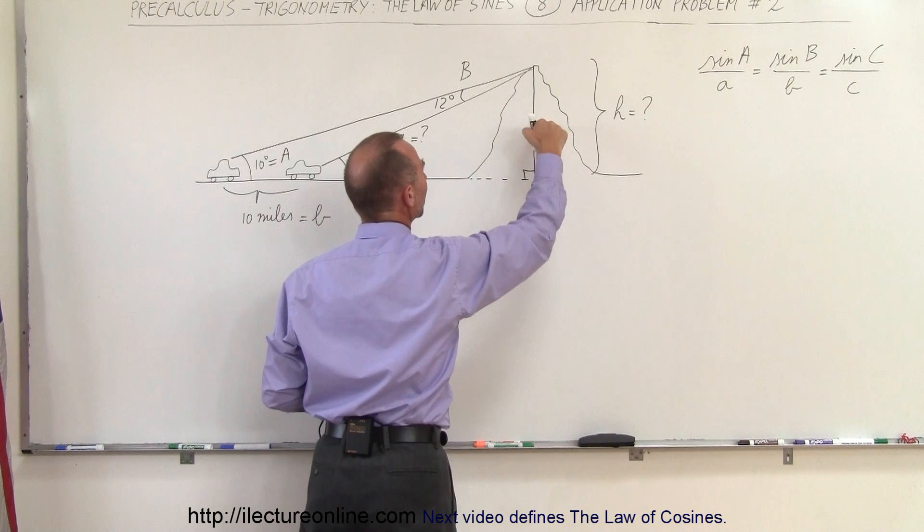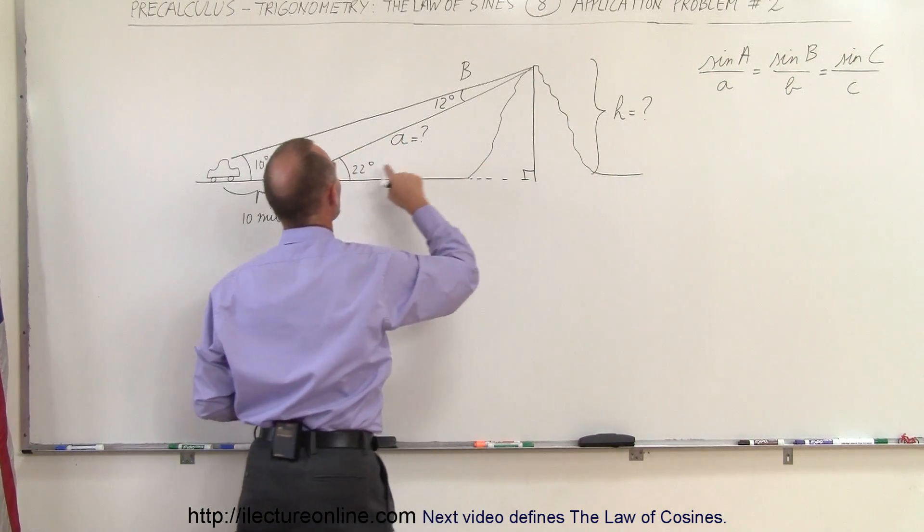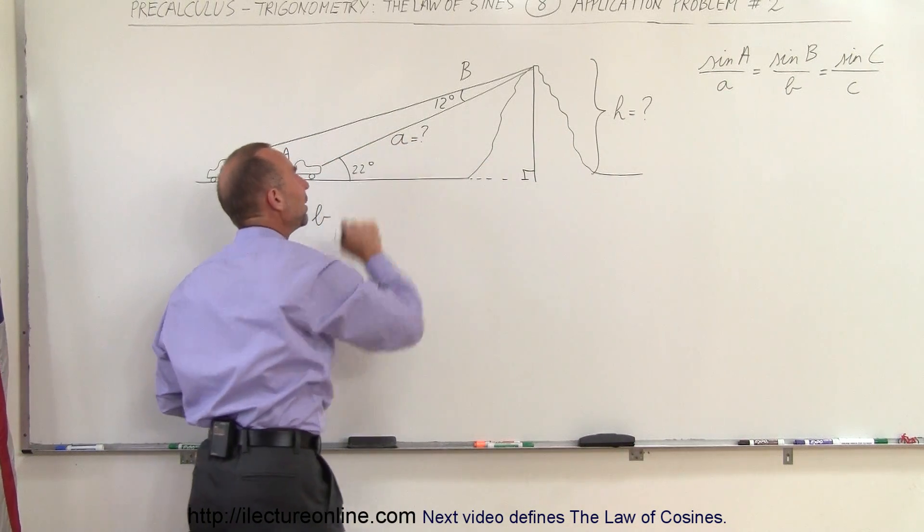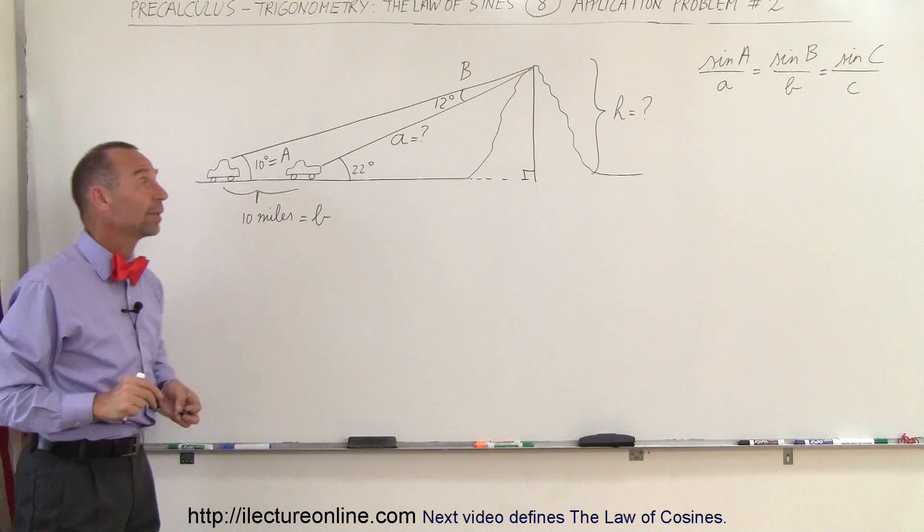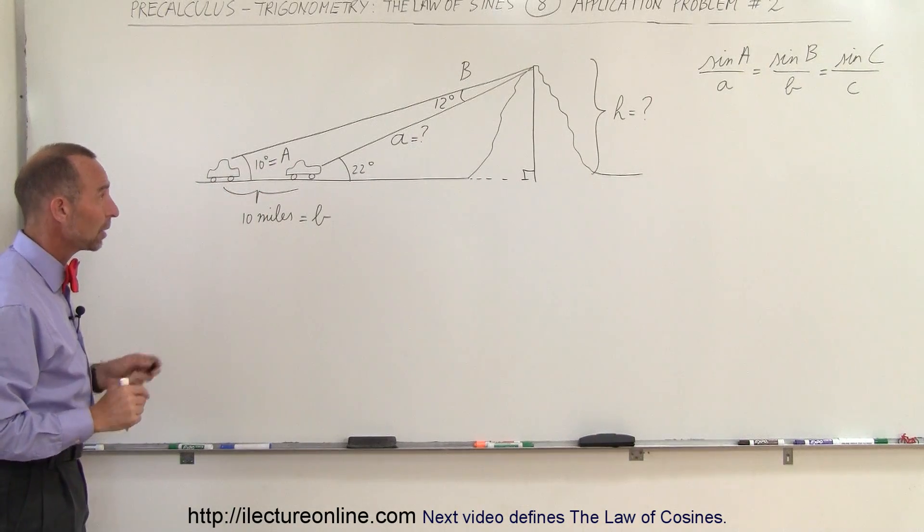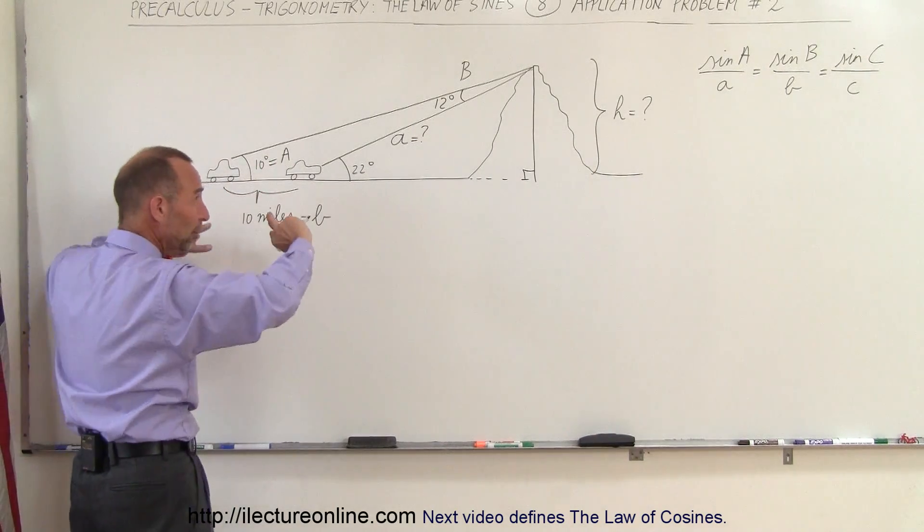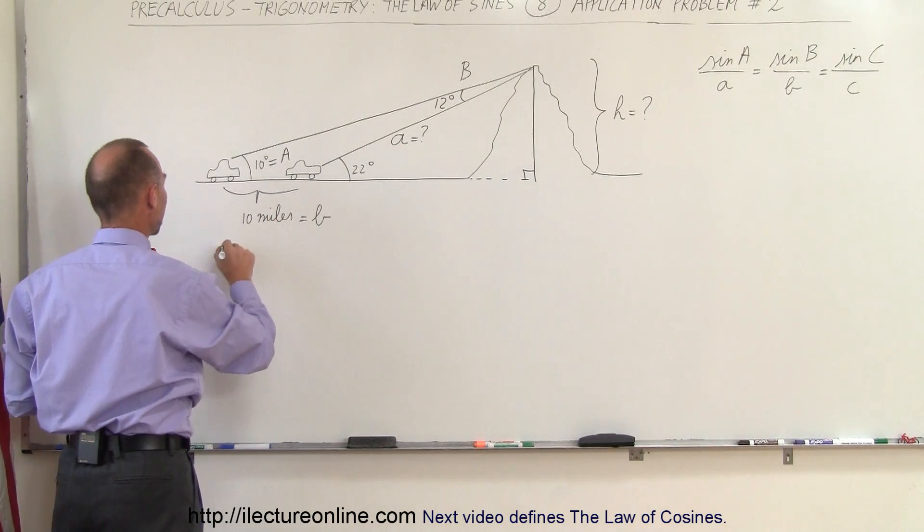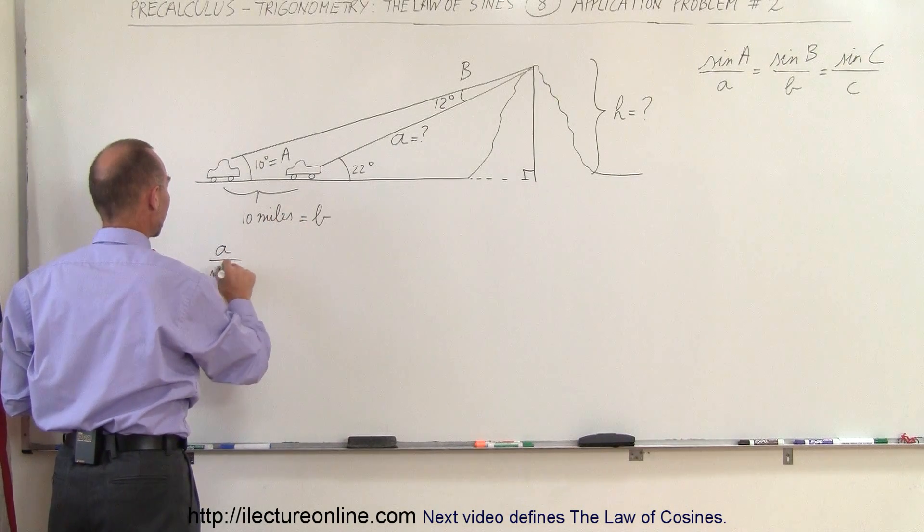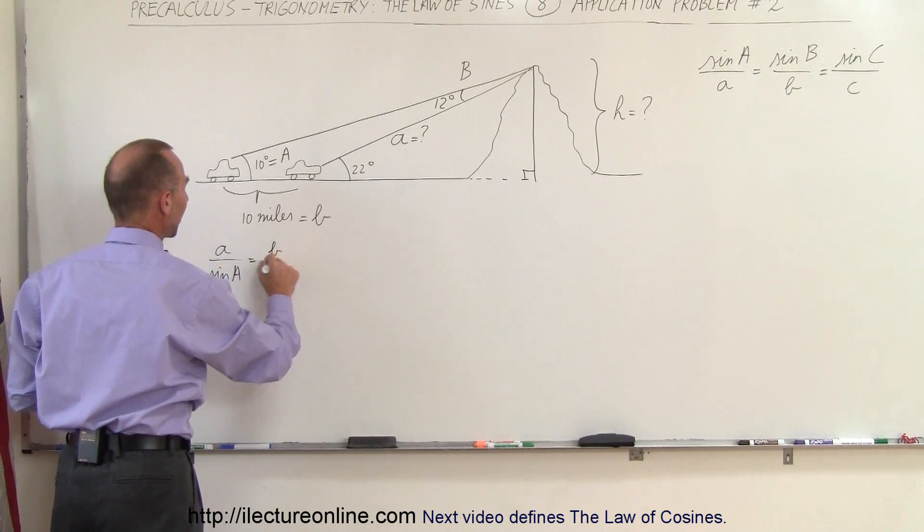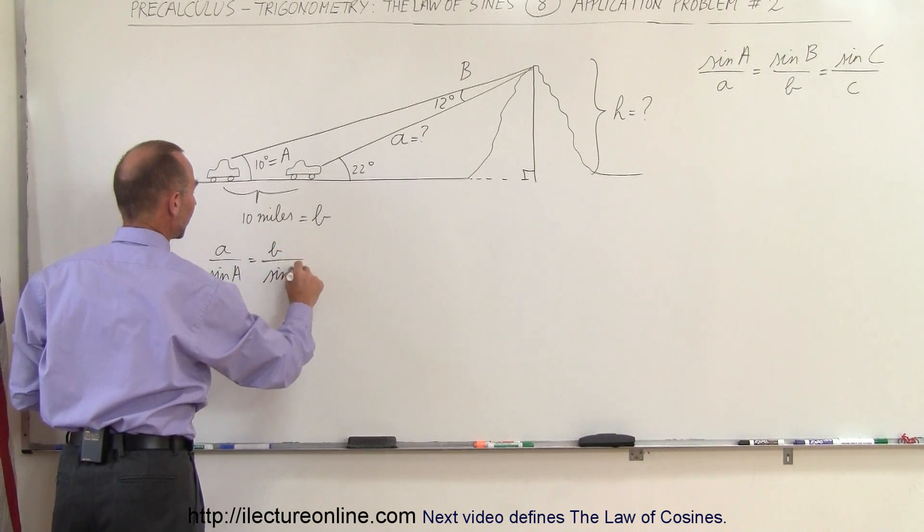We should be able to find A by using this angle and the knowledge of what the hypotenuse will be. Using the Law of Sines, I'm going to reverse the angles and sides. I can write A divided by sine of angle A equals B divided by sine of angle B.